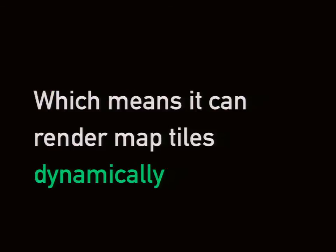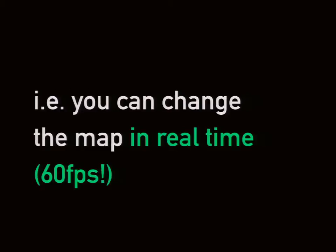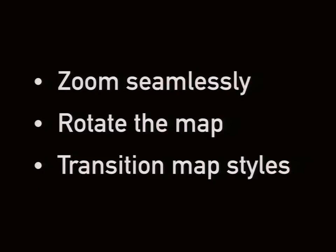Mapbox GL is built on top of OpenGL and it renders map tiles client-side. This means you can render map tiles dynamically — specifically, you can change the map in real time, literally 60 frames per second. So we're talking very dynamic. GL maps can be seamlessly zoomed in and out, you can rotate a GL map, and you can dynamically transition map styles.